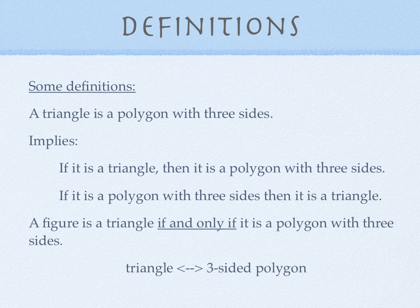If it is a polygon with three sides, then it is a triangle. And we could write it in if and only if form by saying, a figure is a triangle if and only if it is a polygon with three sides. And then we could also write the shorthand, triangle, then the double arrow, three-sided polygon.